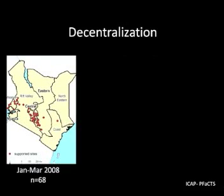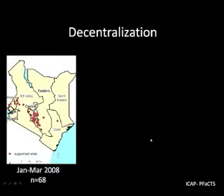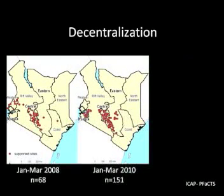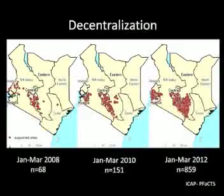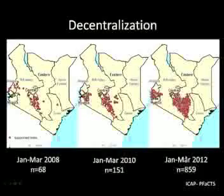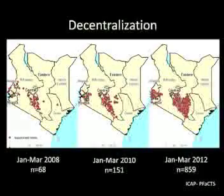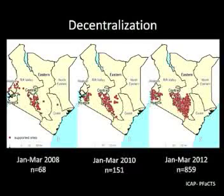Another aspect of the work has been reaching people in remote areas. Centers of excellence in large capital cities are seductive and often where excellent care is provided, but if you want to achieve coverage, you have to reach people where they are — this means decentralization. In Kenya, for example, in 2008 there was support for 68 facilities; in 2010, 101 facilities; and in 2012, 859 facilities providing these services. This is important for equity and for coverage.